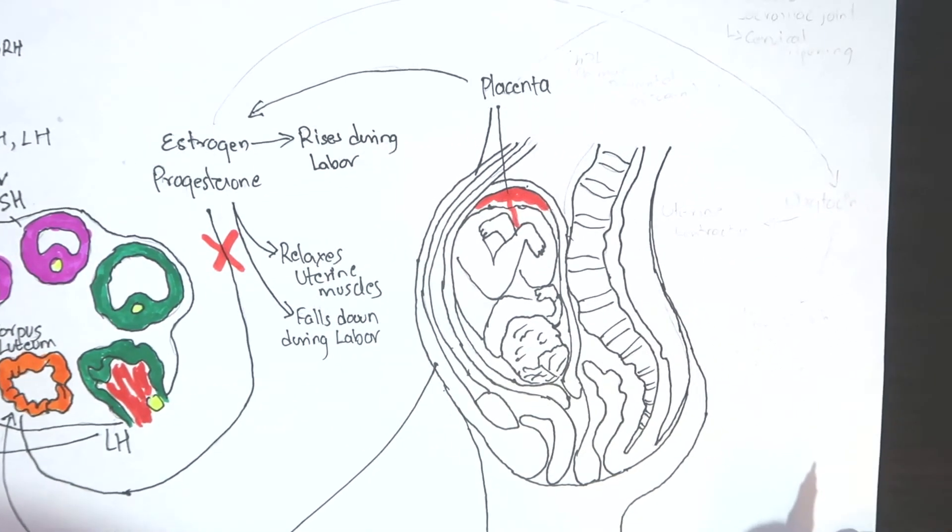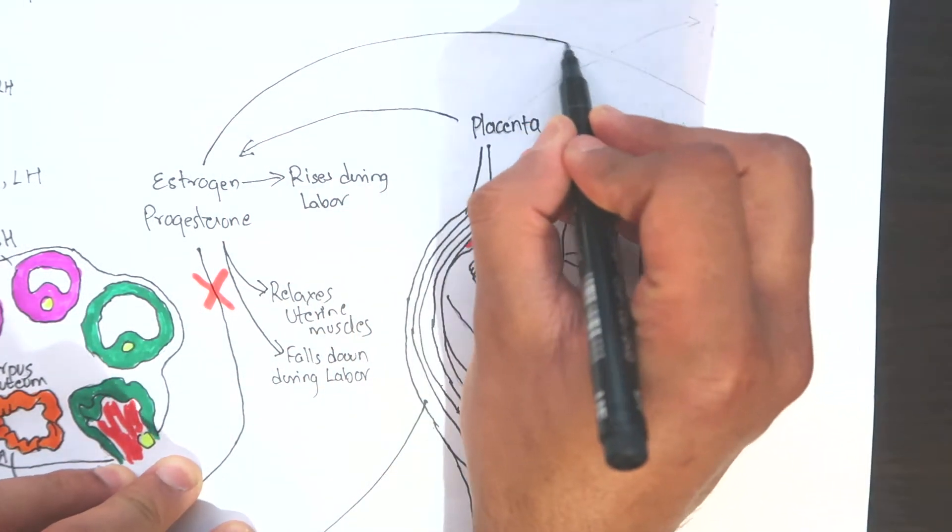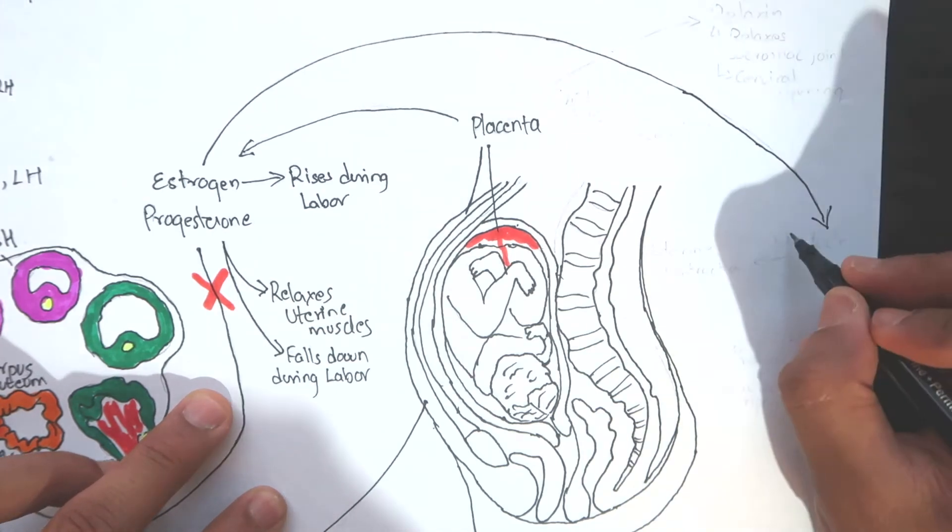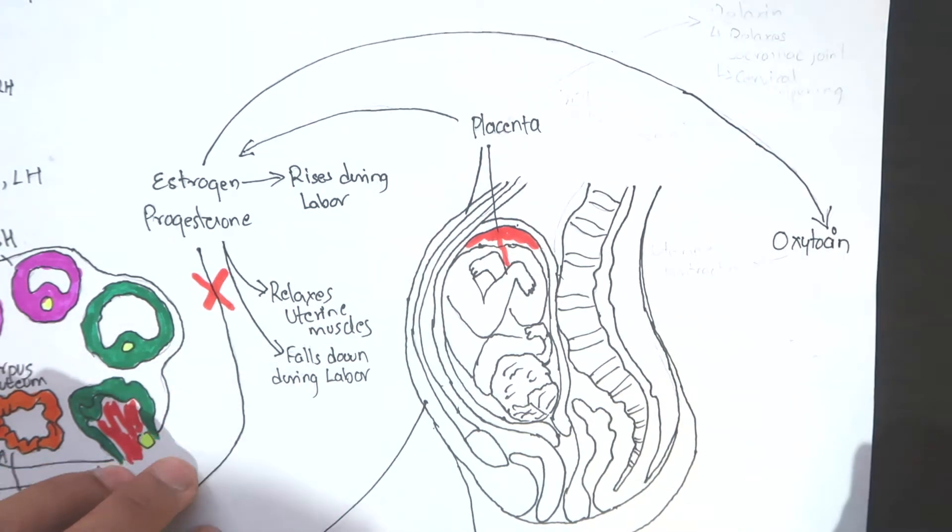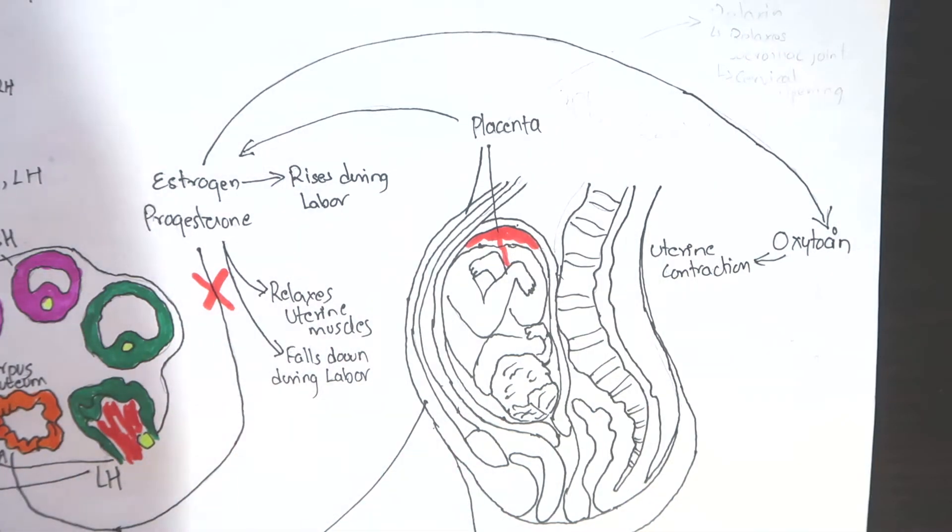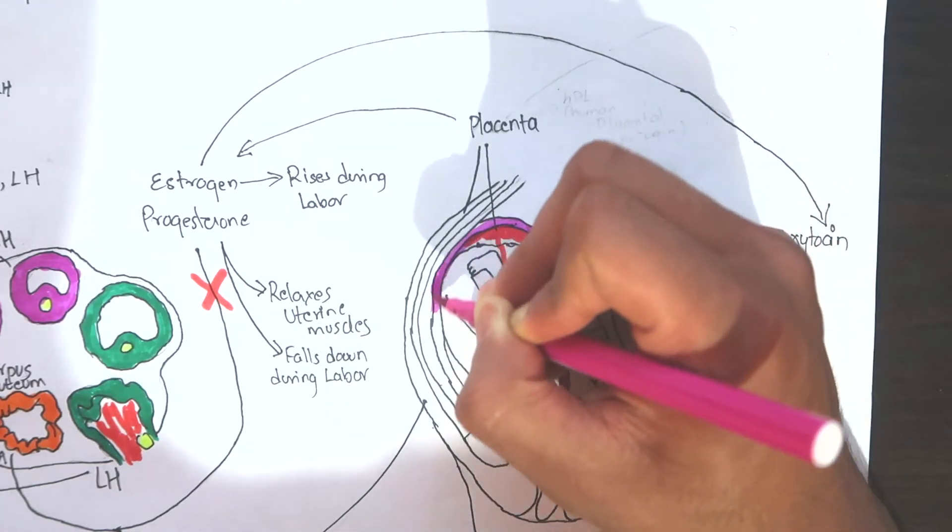The estrogen increases the receptor of a hormone in the uterine muscles. This hormone is released from the posterior pituitary and is called oxytocin. Oxytocin binds to its receptor in the uterine muscles and causes uterine contraction thus inducing labor.